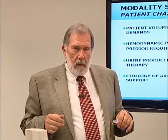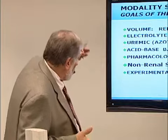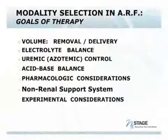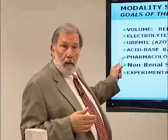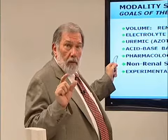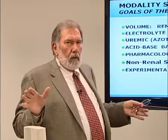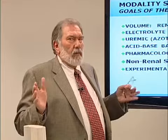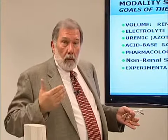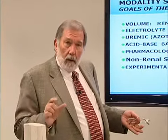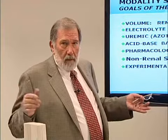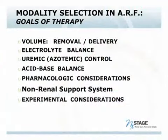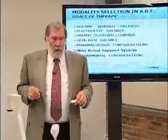Moving on, we can see that volume and electrolyte balance, azotemic control, and pharmacological considerations are very important. When you're on intermittent versus continuous therapy, the whole approach to drug control is different. Continuous therapy tends to remove more drug than intermittent because it's ongoing — that's obvious. Non-renal support systems and experimental considerations are also driving the goals for many of these therapeutic interventions.